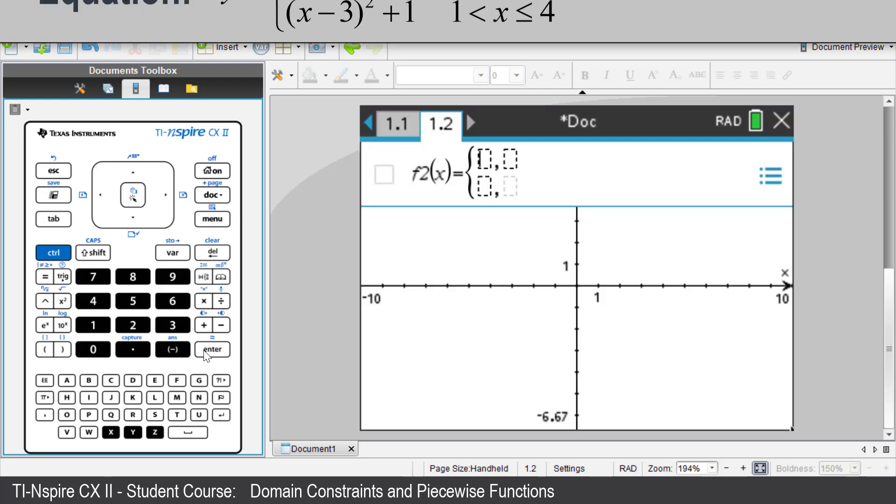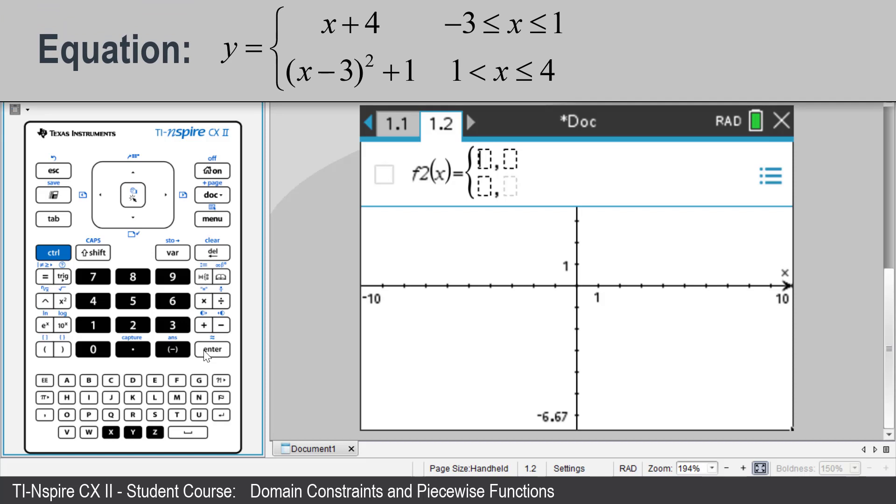We are going to graph y equals x plus 4 with the restricted domain from negative 3 through to 1. And y equals x minus 3 squared plus 1 with the restricted domain from 1 through to 4.